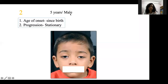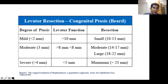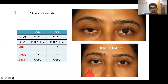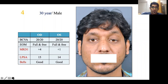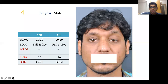Q&A: On fascia lata use — while standard teaching says fascia lata should be harvested after age 18 (when fully developed), recent publications show it can be used in children as young as 4–5 years. For exam purposes, it is safer to state that fascia lata is used after age 18, then add that recent evidence supports use from age 4 onwards as supplementary information.